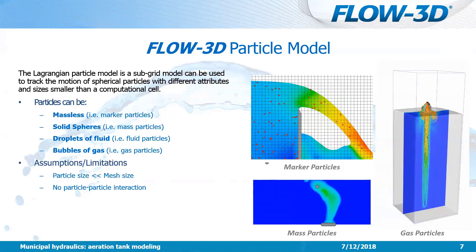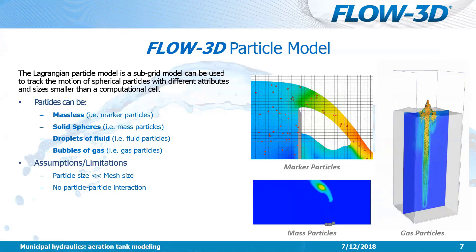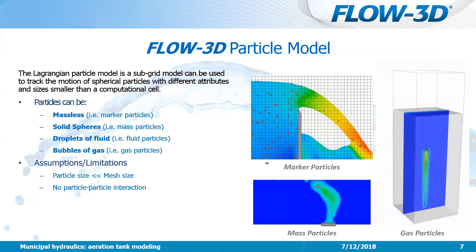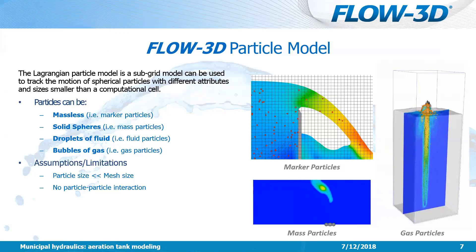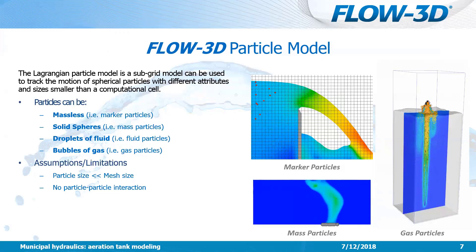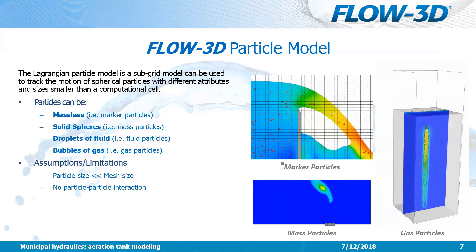Then we have fluid particles, which are treated as droplets of fluid. And lastly, we have gas particles, which behave as small bubbles or droplets of air or some other defined gas. As with a mass particle, we define the diameter and density of these gas particles. We also have a few other options with gas particles that we'll discuss during our model setup example.